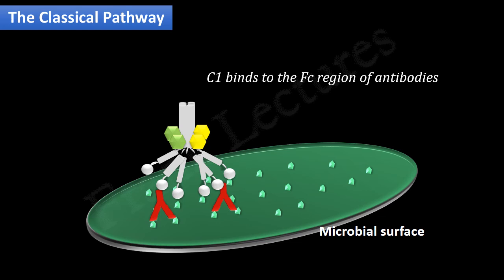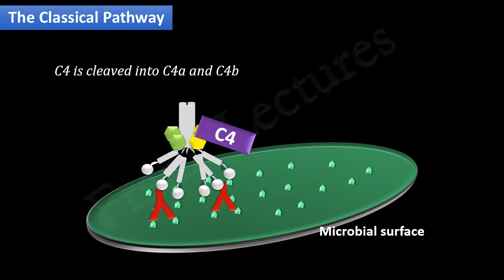If you remember the lectin pathway, it is easy to understand the next steps since they are similar. In the next step, complement protein C4 is cleaved by proteases into C4A and C4B. C4B binds to the microbial surface.